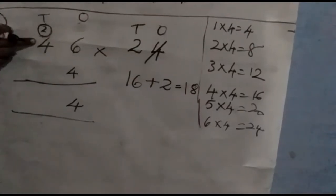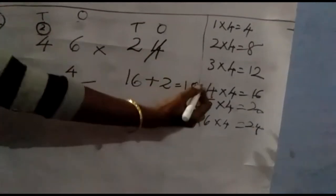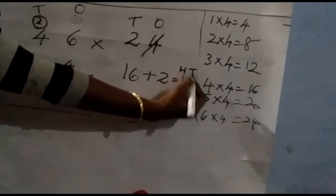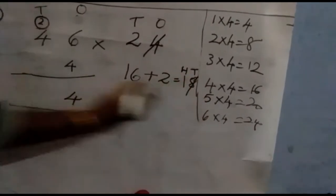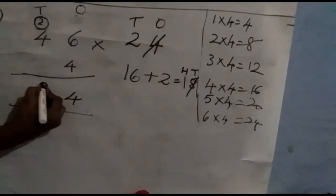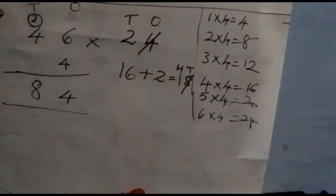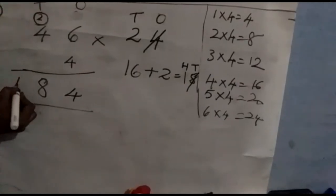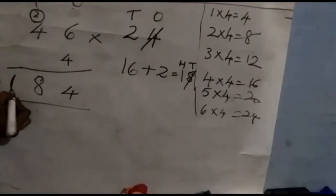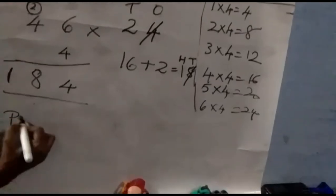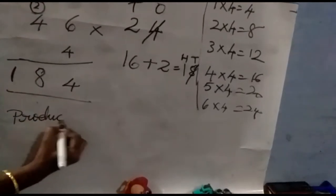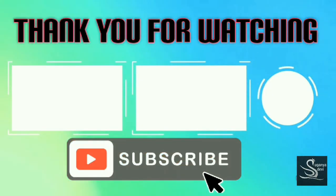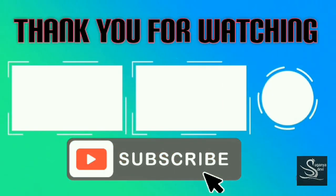We multiplied the tens place, so apply the place value: tens and hundreds. Strike out the eight and put eight in the tens place and one in the hundreds place. There is no hundreds digit in the original number, so leave a gap and put one there. The product equals one hundred and eighty-four.